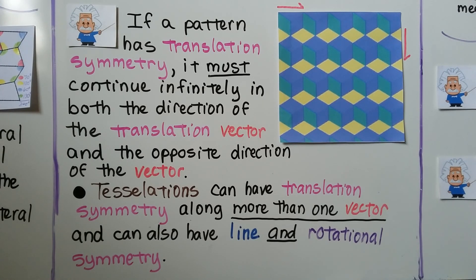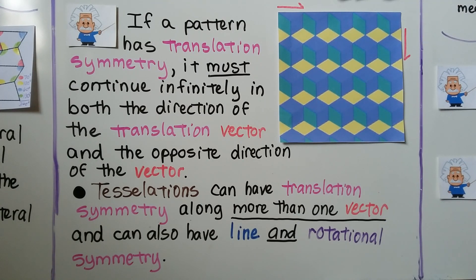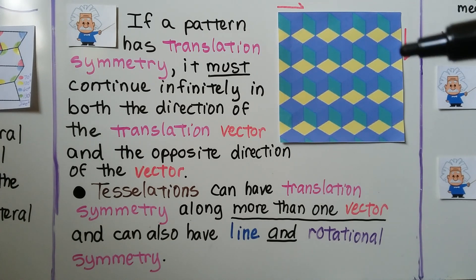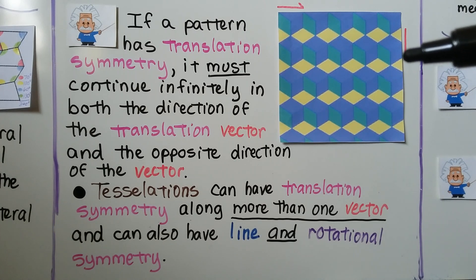If a pattern has translation symmetry, it must continue infinitely in both directions of the translation vector. Tessellations can have translation symmetry along more than one vector — one vector shows translation horizontally, and another vector shows the yellow shape translating downward again and again.